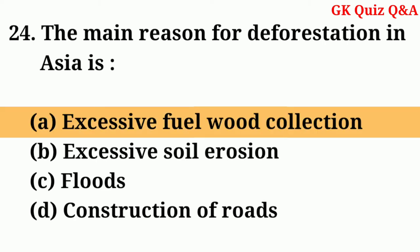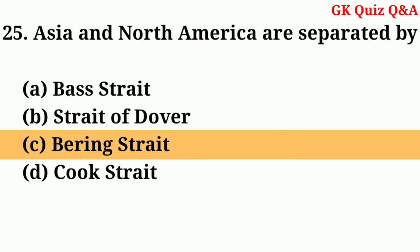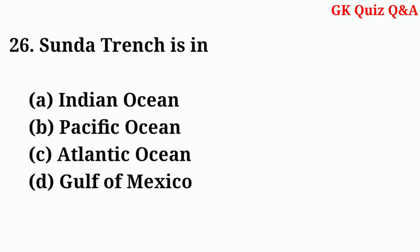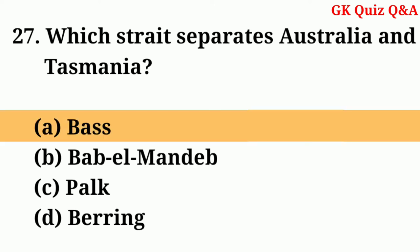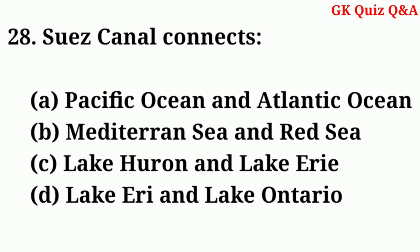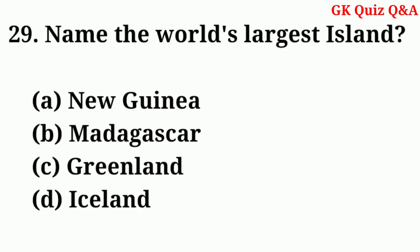The main reason for deforestation in Asia is? Answer: A — Excessive fuel wood collection. Asia and North America are separated by? Answer: C — Bering Strait. Sunda Trench is in? Answer: A — Indian Ocean.